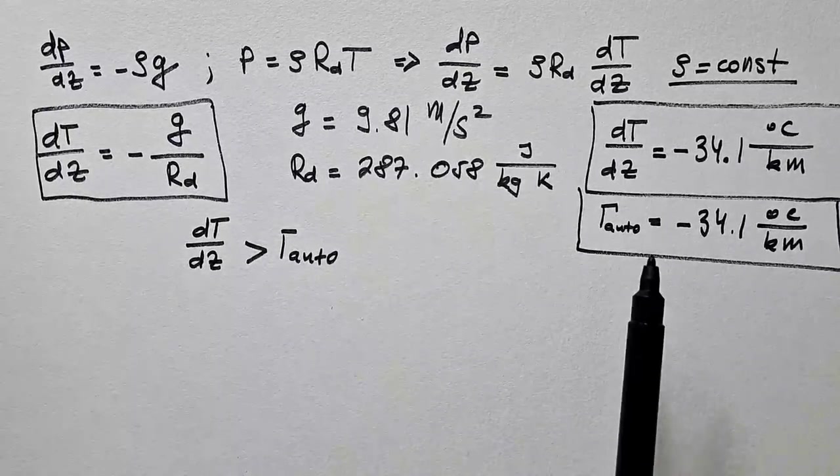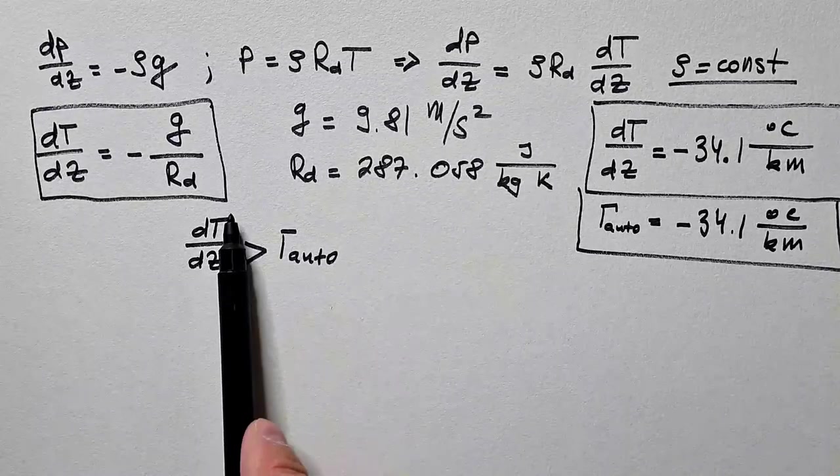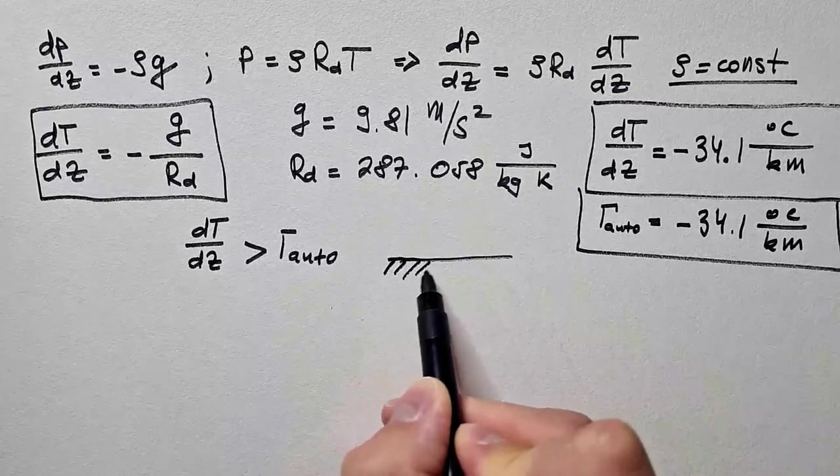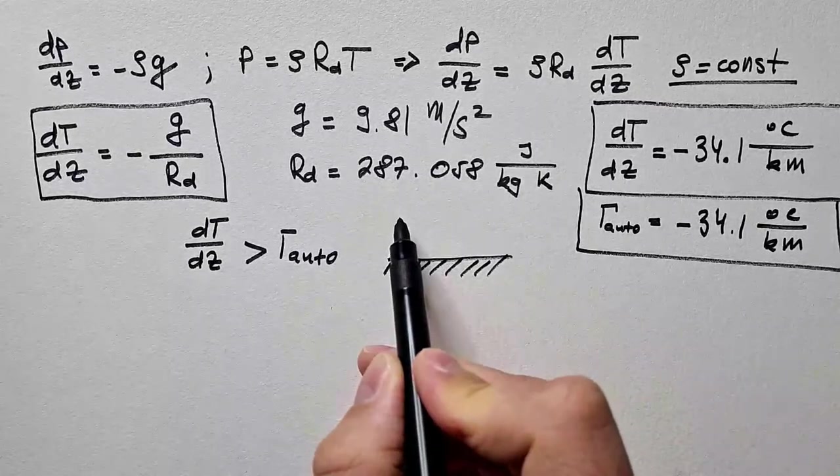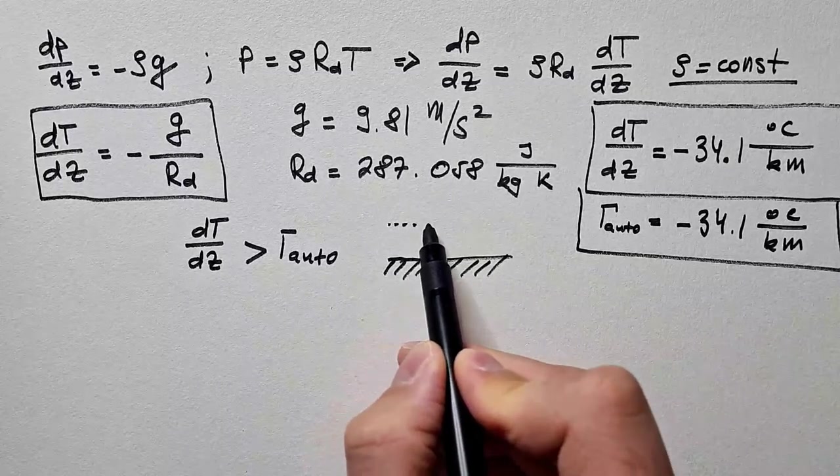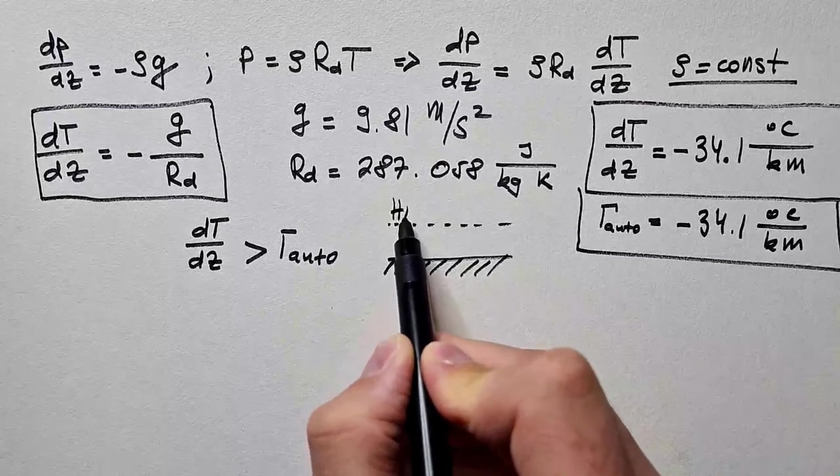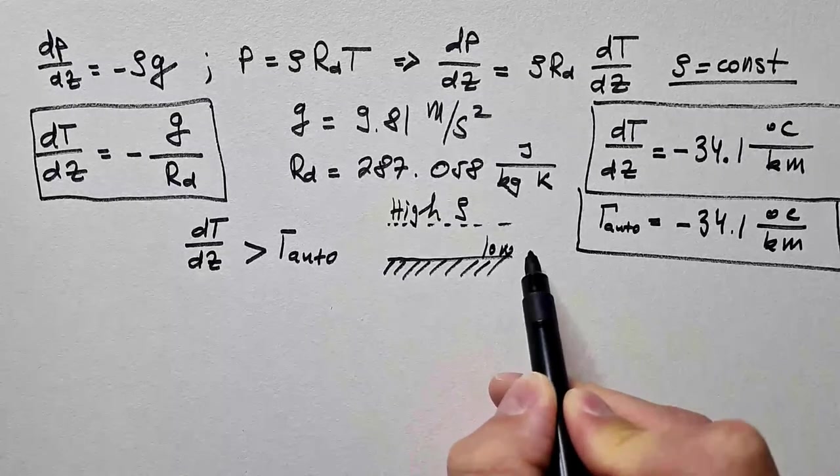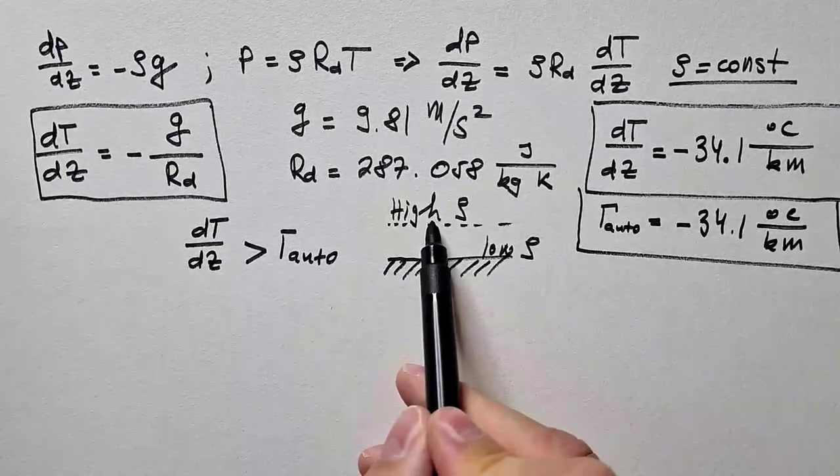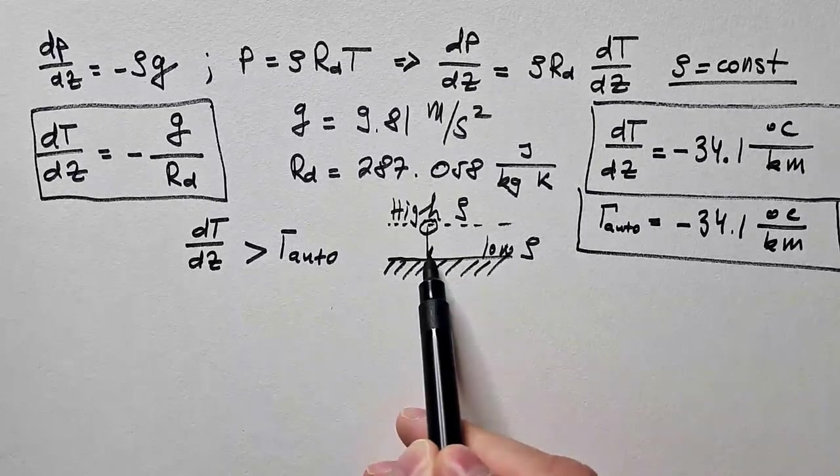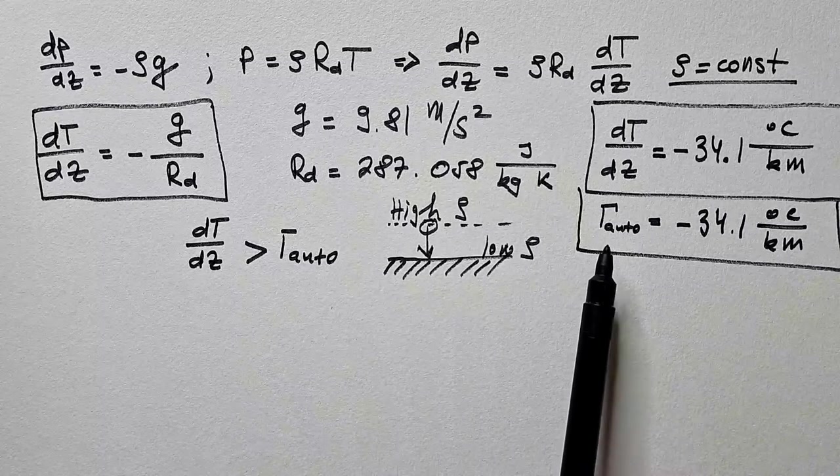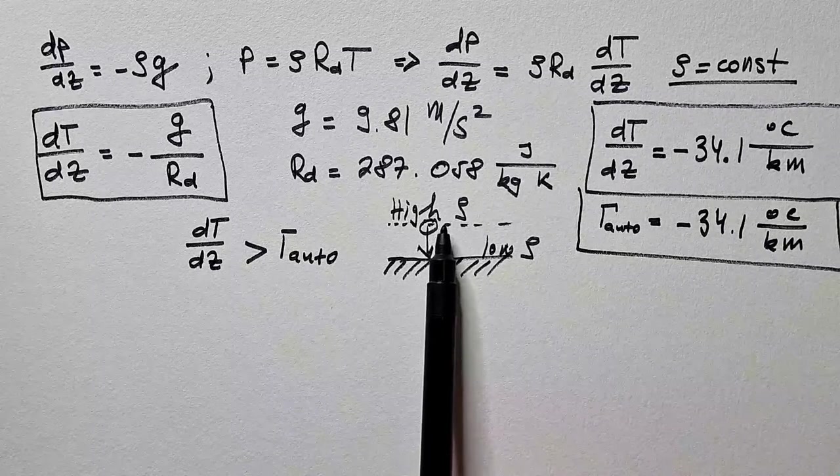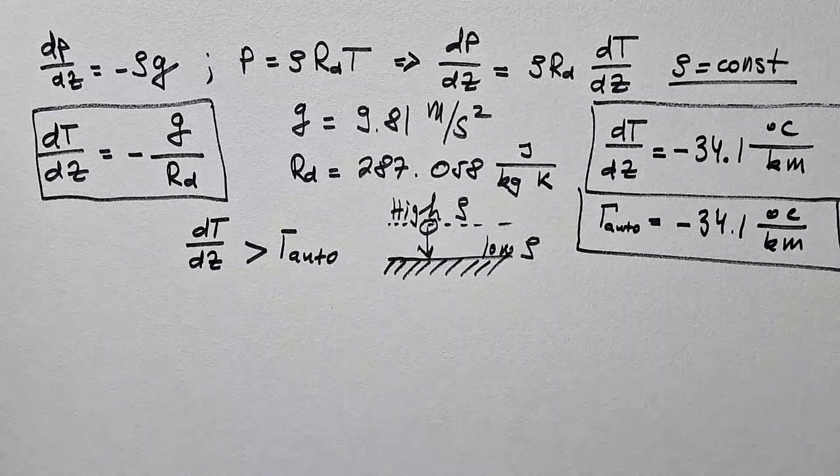Let me also explain why this is called auto convective. If the temperature gradient exceeds γ_auto, we will have a situation where density will increase with the height. So at this height above surface we have high density, and close to the surface we will have low density. But denser air will spontaneously sink down, and that's why we call this temperature lapse rate auto convective because vertical motion is auto-generated and there is no need for some external forcing.